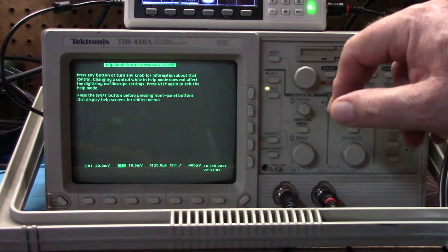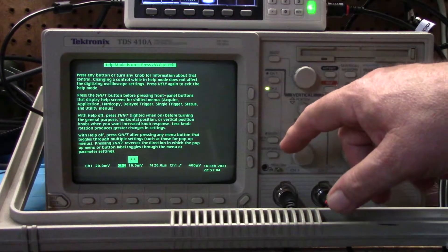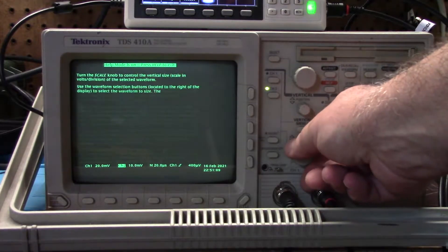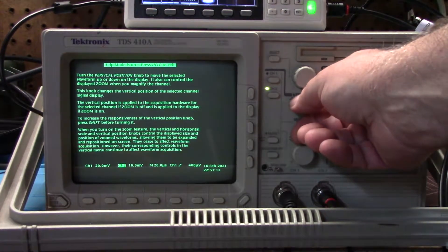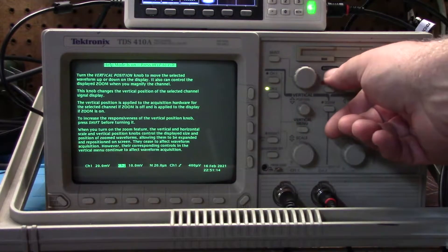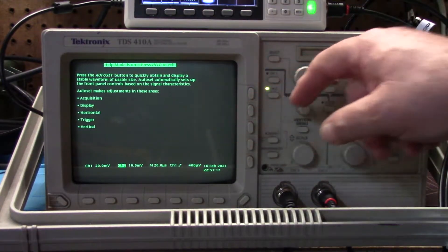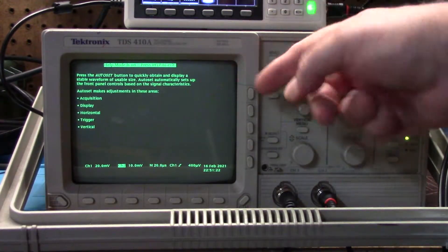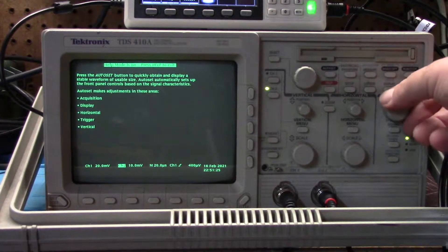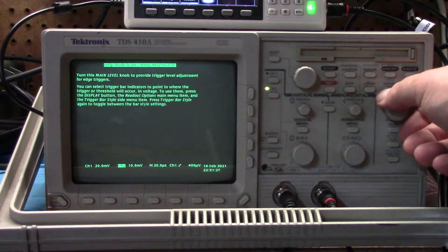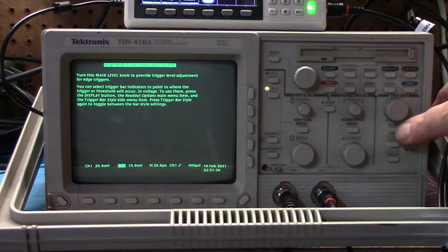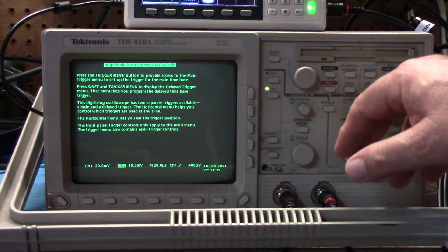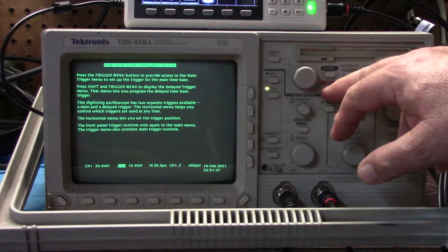The scope is pretty cool, it has built-in help. So I can hit the help button and then any knob I touch, instead of making a change to the setup of the scope, tells me what this will do. So I just hit the auto set button and my help is all context sensitive for me hitting the auto set button. If I adjust the trigger level knob it'll tell me what this does. I get context sensitive help for that button and then help again to get out of it.